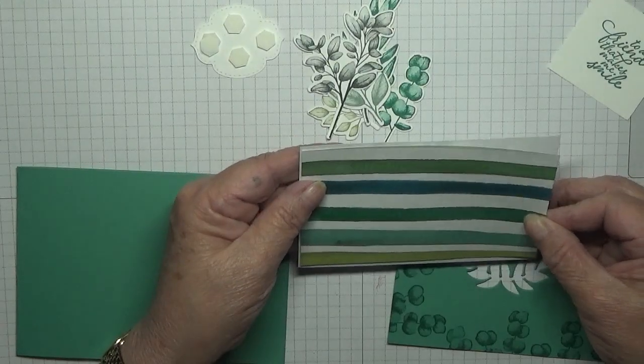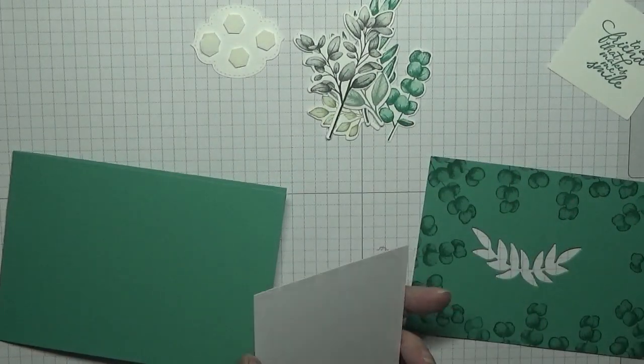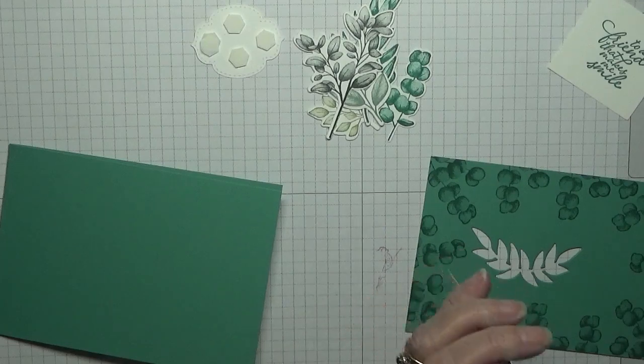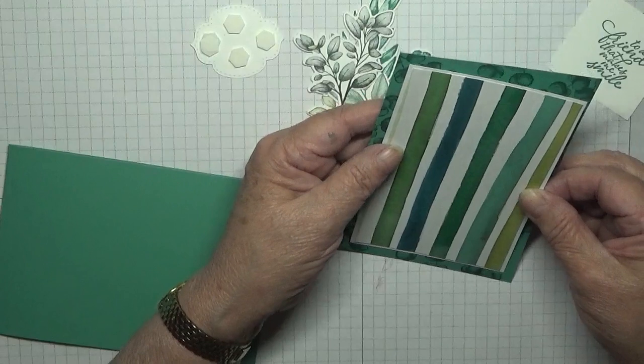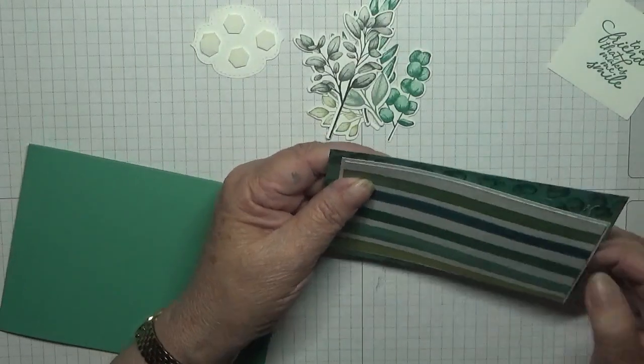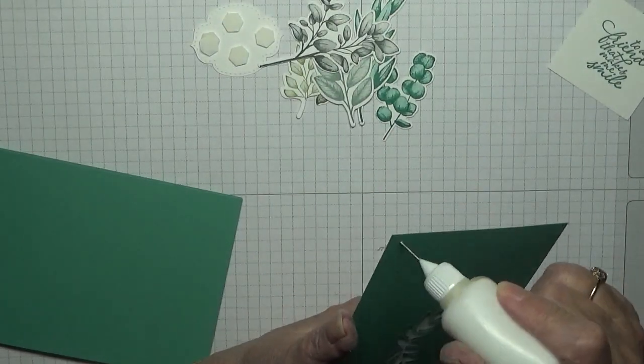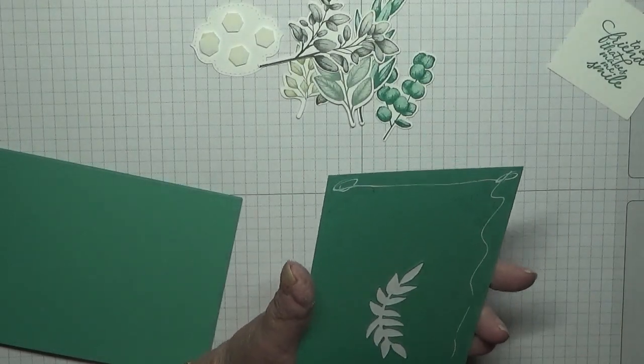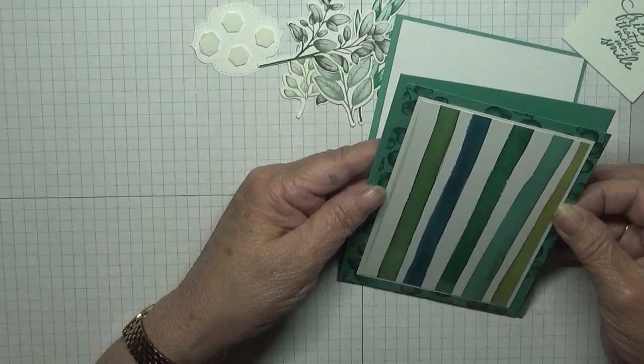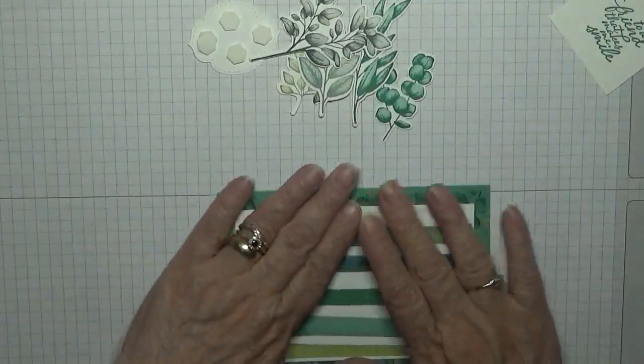Glue the DSP on to the white, and then glue this on to the Just Jade, and then glue this on to the front of the card like that.